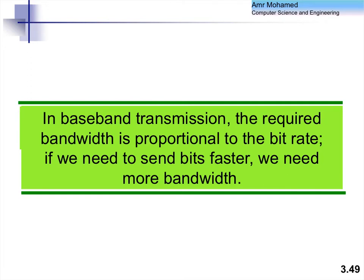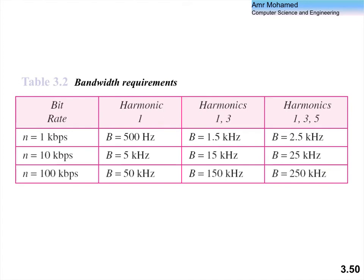In baseband transmission, the required bandwidth is proportional to the bit rate — the more bits per second, the more bandwidth needed. It is also proportional to the number of harmonics: a higher-quality signal with more harmonics requires more bandwidth. Bandwidth is therefore determined by two parameters: the bit rate N, and the number of harmonics used to represent the signal.